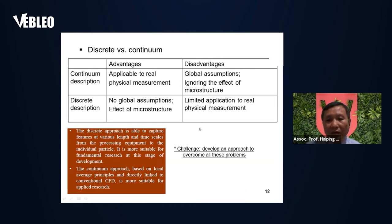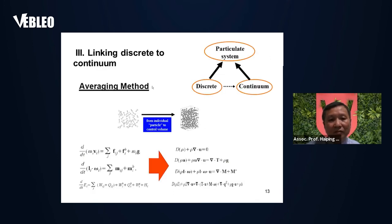I'd like to introduce a method that provides the potential to develop such a theory — the averaging method, which links the discrete to the continuum. We can see the governing equation for the discrete approach, based on Newton's law of motion. Then we conduct the averaging method and derive the equations for the continuum approach, linking the discrete governing equations to the continuum governing equations.